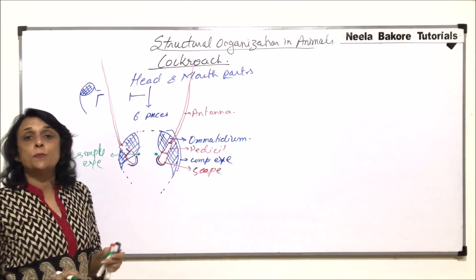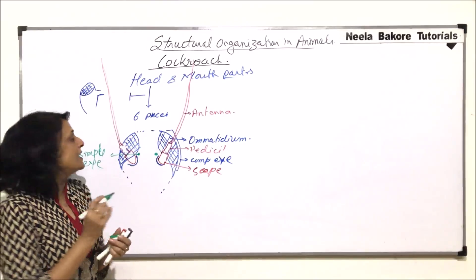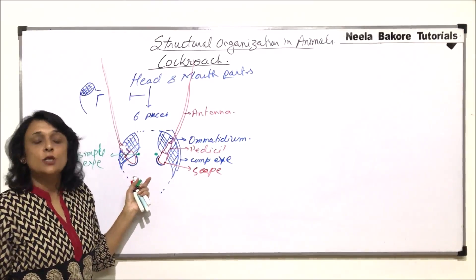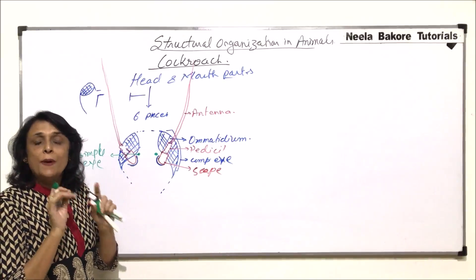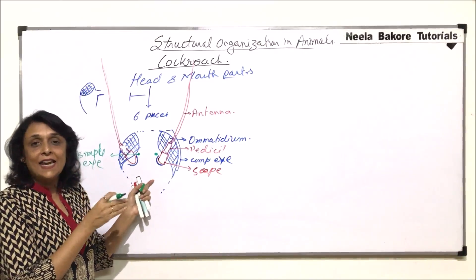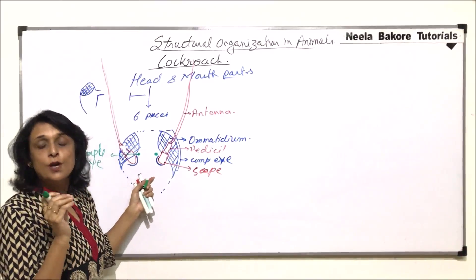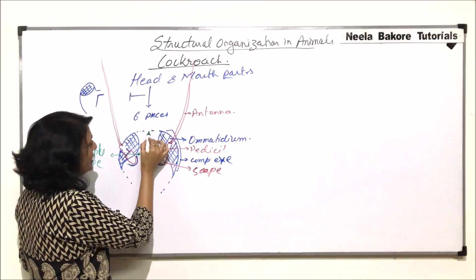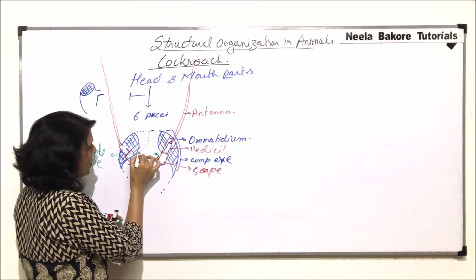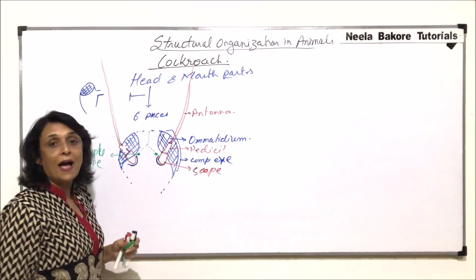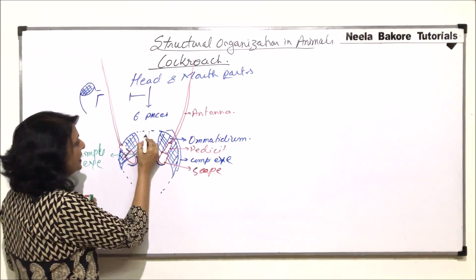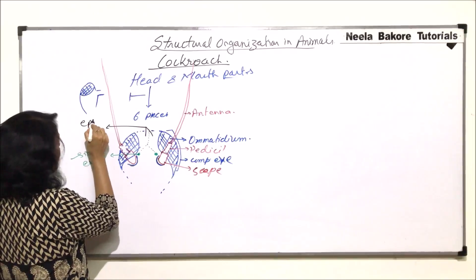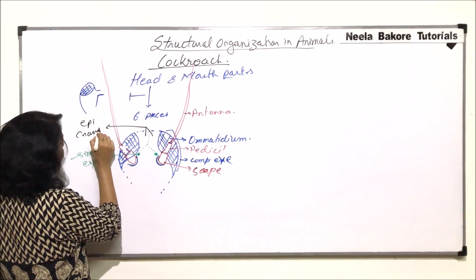We said there are six pieces forming the head. As mentioned, we don't see these six pieces clearly in adults since they are fused. But in younger stages, those lines are visible in the form of an inverted Y. The two pieces on either side of this inverted Y are called the epicranial pieces.